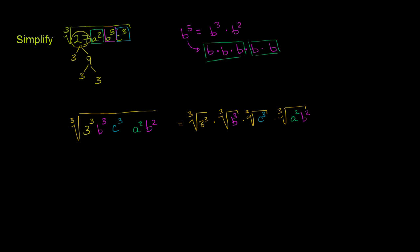Clearly the cube root of 3 to the third, or the cube root of 27, is just 3. The cube root of b to the third is just b. And the cube root of c to the third is clearly just c. So our whole expression has simplified to 3 times b times c times the cube root of a squared b squared.